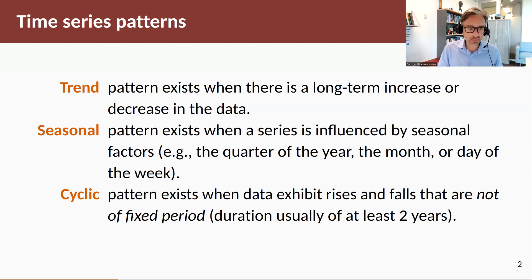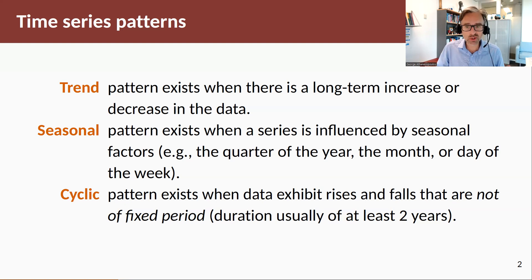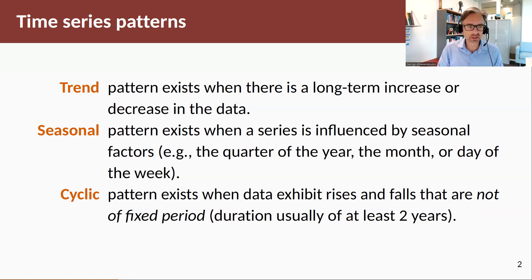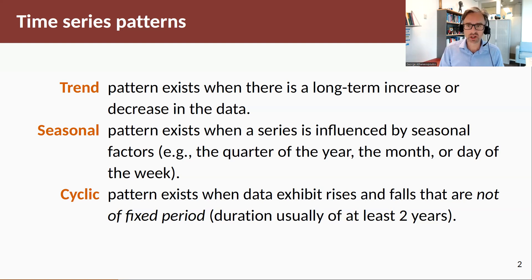A cyclic pattern exists when the data exhibits rises or falls that are not of fixed period. Usually the minimum duration of these cycles is at least two years. A common cycle is the business cycle, which varies between two and seven — or nine — years. Something very identifiable about a cycle is that it is very asymmetric: long terms of growth are followed by short, sharp busts.